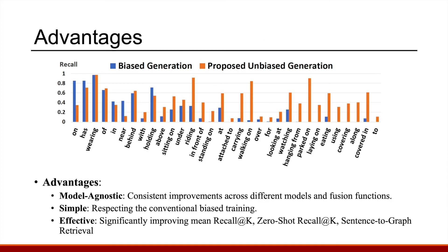The result is quite amazing. Given the same trained Neural Motifs model, after applying our unbiased inference, we almost perfectly remove the long-tail distribution apparent in the performance. The tail categories can perform as well as the head ones. The only thing hindering performance is the difficulty of each category, not the distribution anymore.